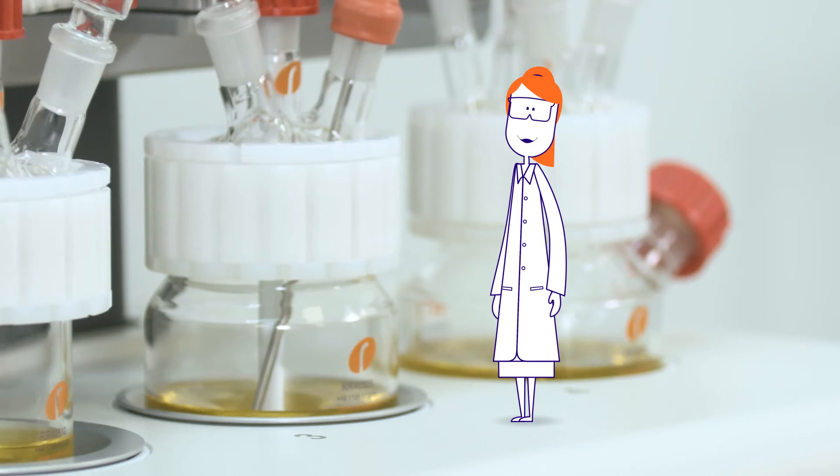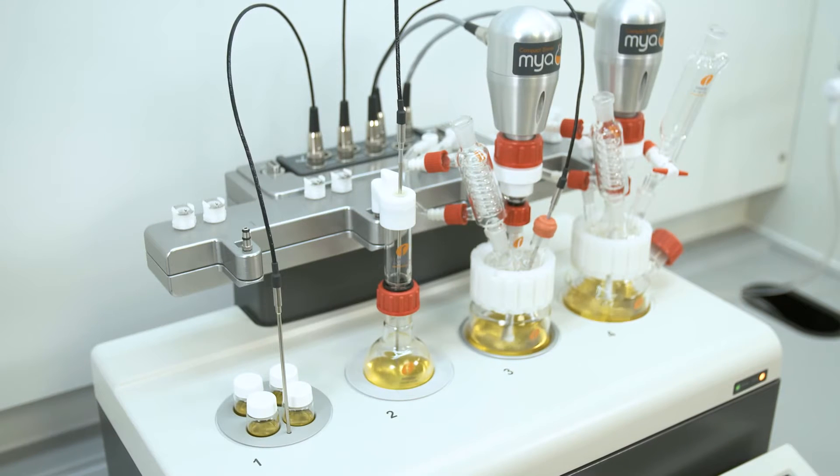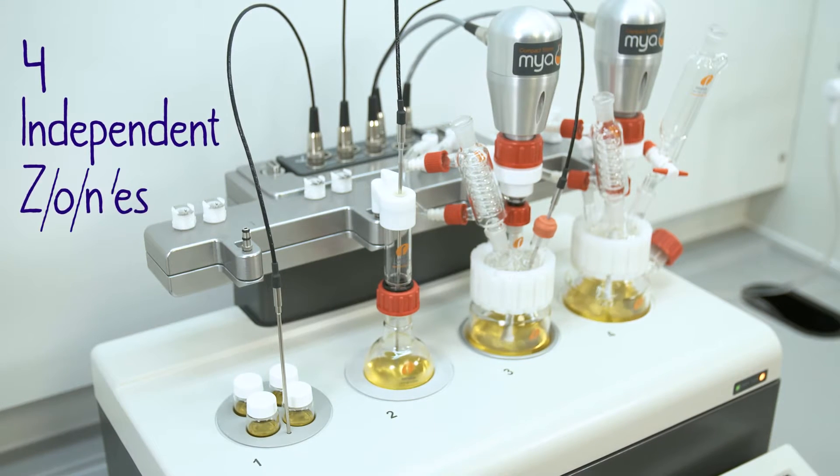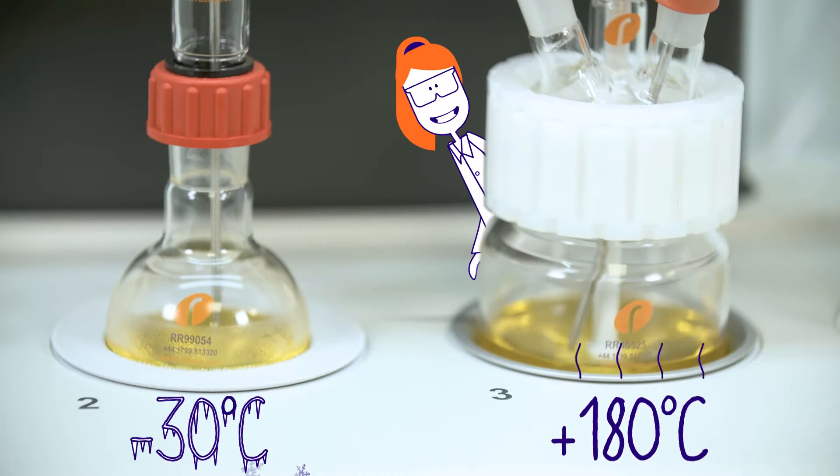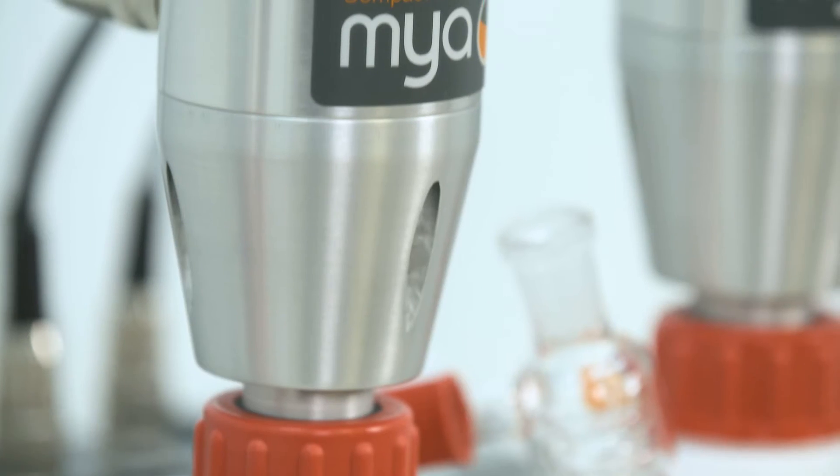Impressed? You should be. Maia 4 will heat and cool up to four positions independently from minus 30 to 180 degrees with a choice of magnetic or overhead stirring.